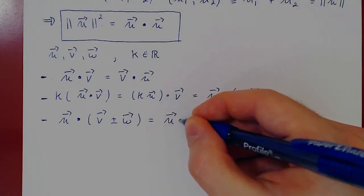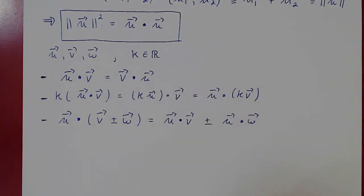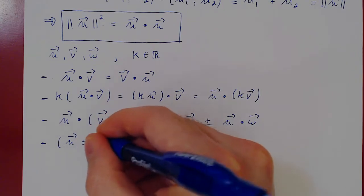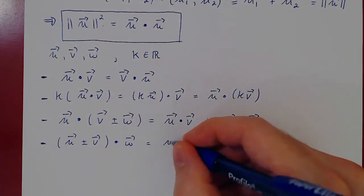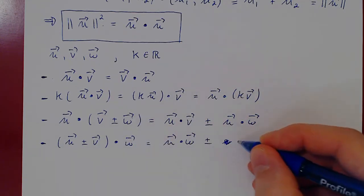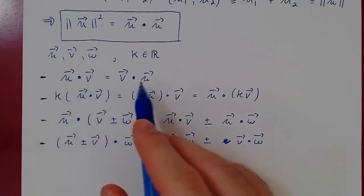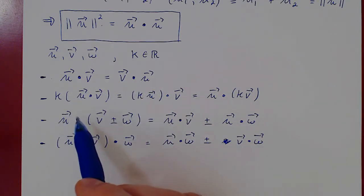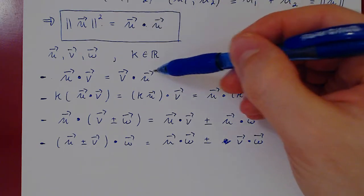Another property: if you do u dotted with v plus or minus w, you can distribute the dot product over the sum or difference of these vectors. You can treat u, v, and w as if they were real numbers and the dot product were basic scalar multiplication. This gives u dot v plus or minus u dot w. The same holds for u plus or minus v dotted with w: you get u dot w plus or minus v dot w.